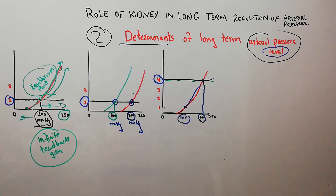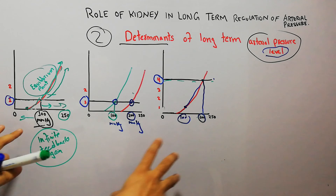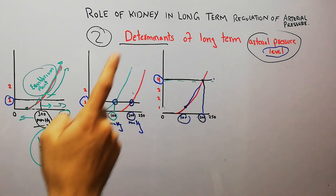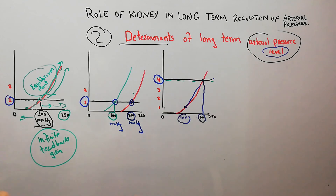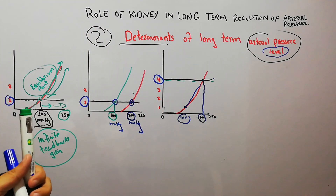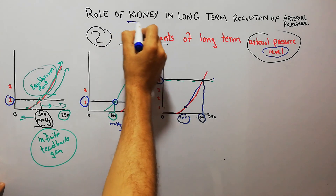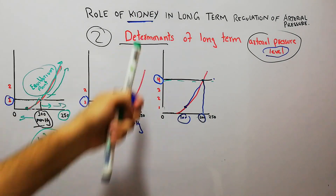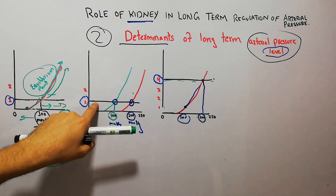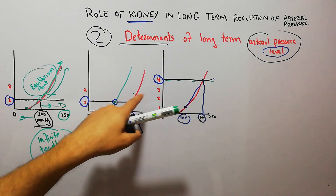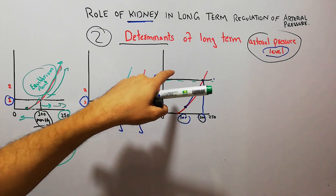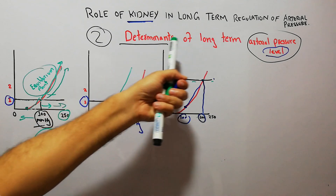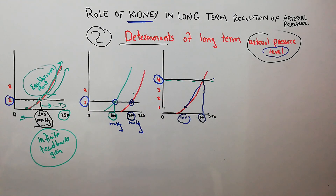The purpose of discussing these two graphs and examples is to show that arterial pressure is very much dependent on renal function — which is our main topic, the role of kidneys in the long-term regulation of arterial pressure — and it is also dependent on the intake of salt and water. Changes in renal function and increase or decrease in the intake of salt and water can both shift the arterial pressure level, and these are the two most important determinants of long-term arterial pressure level.